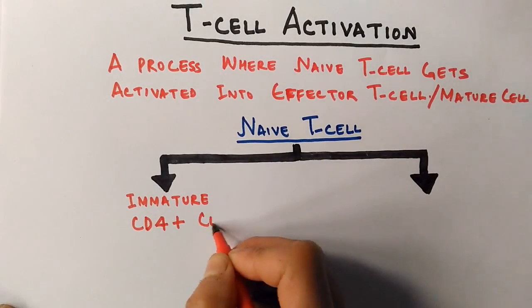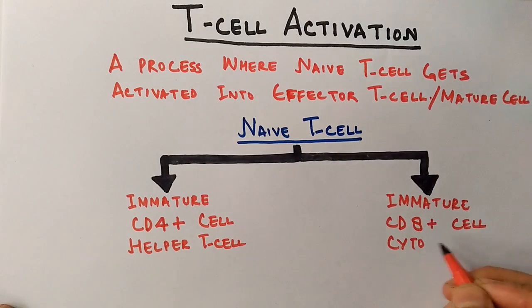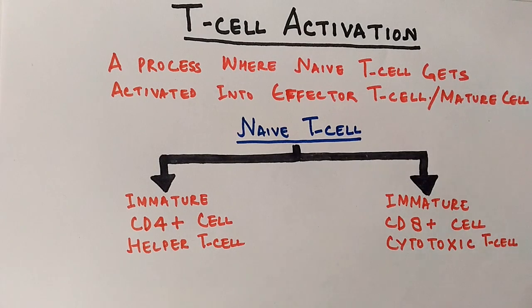One is called CD4 positive cell, also called helper T cell, and another is CD8 positive cell, also called cytotoxic cell. Both cells are in immature form, so they cannot induce or direct any immune response unless they are activated.